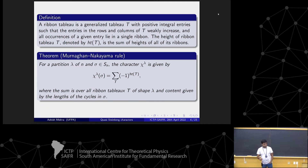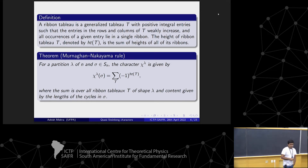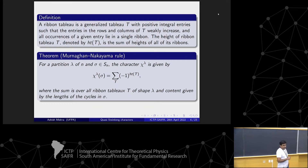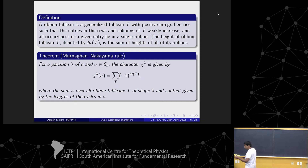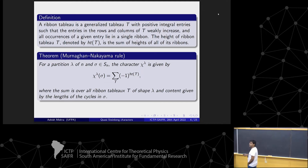Given a Young diagram — I will be using the words Young diagram and partition interchangeably — one can define a Ribbon Tableau. A Ribbon Tableau is a generalized tableau such that the entries in the rows and entries in the columns are weakly increasing, so it is more general than a semistandard Young tableau. All occurrences of a given entry form a ribbon. The height of the Ribbon Tableau will be the sum of the heights of all the rim hooks within this tableau.